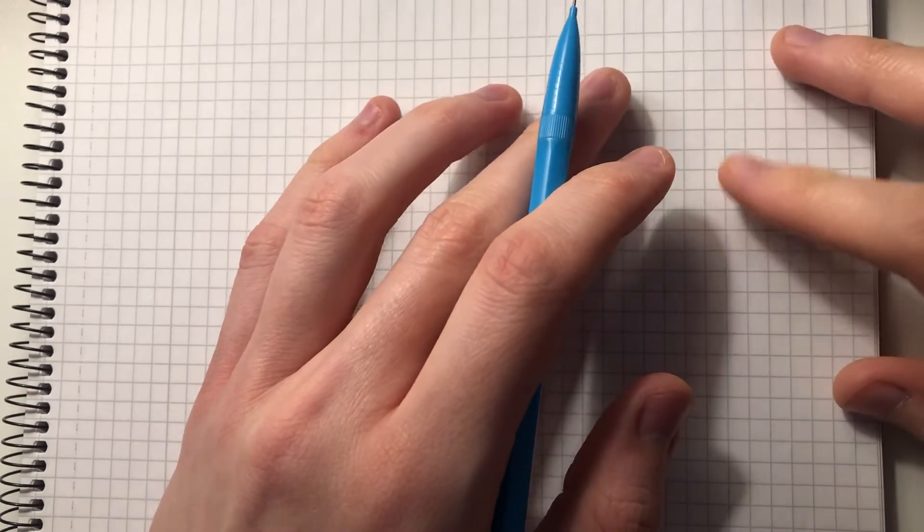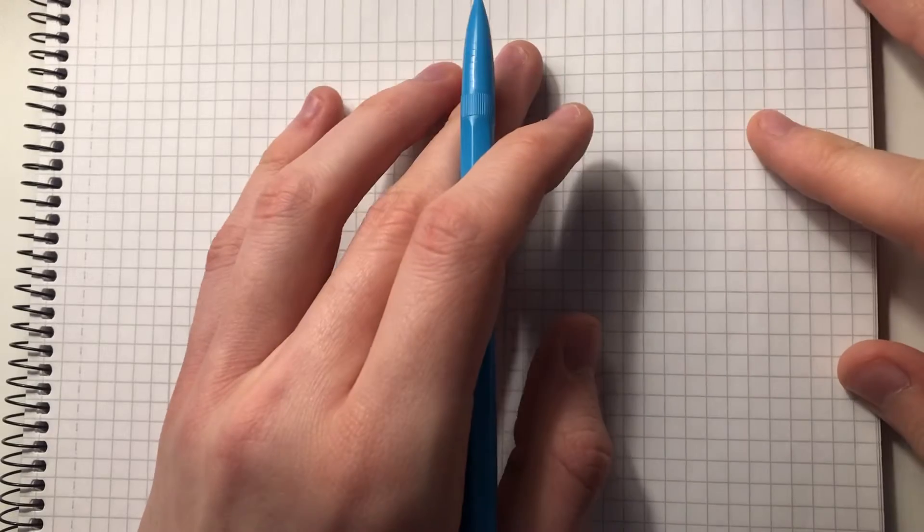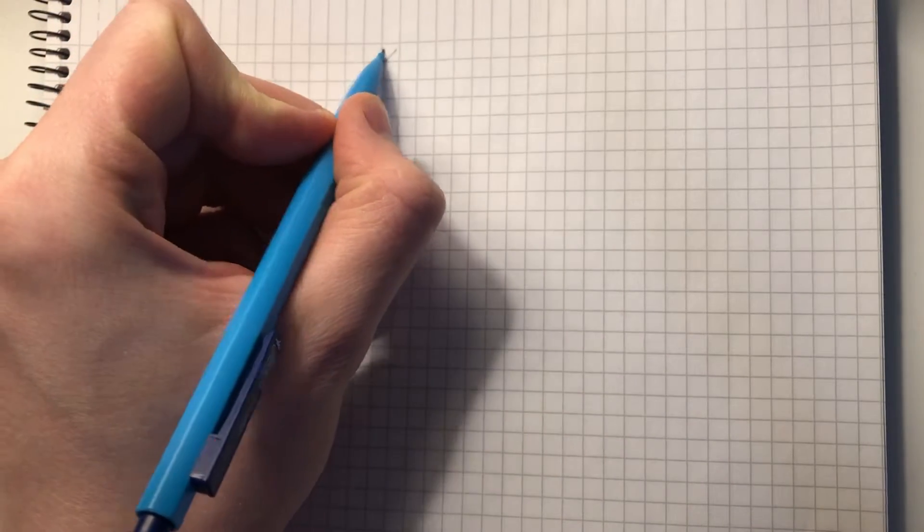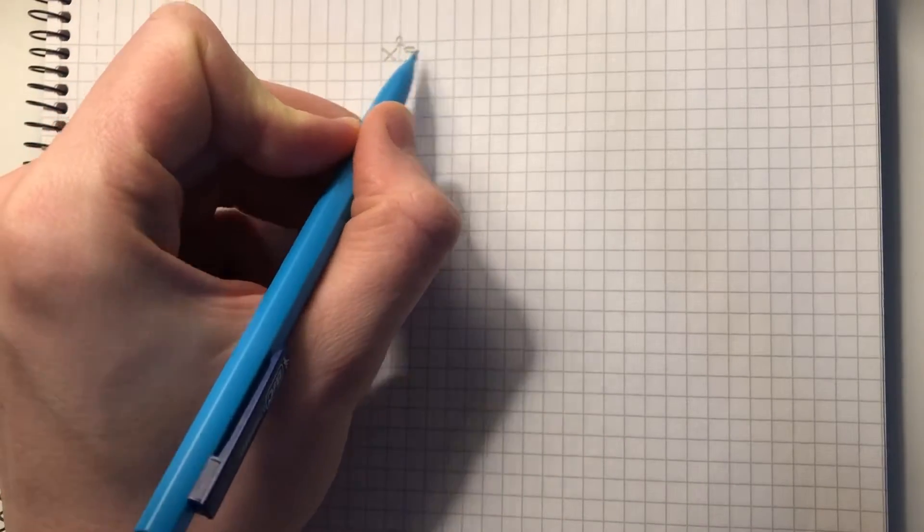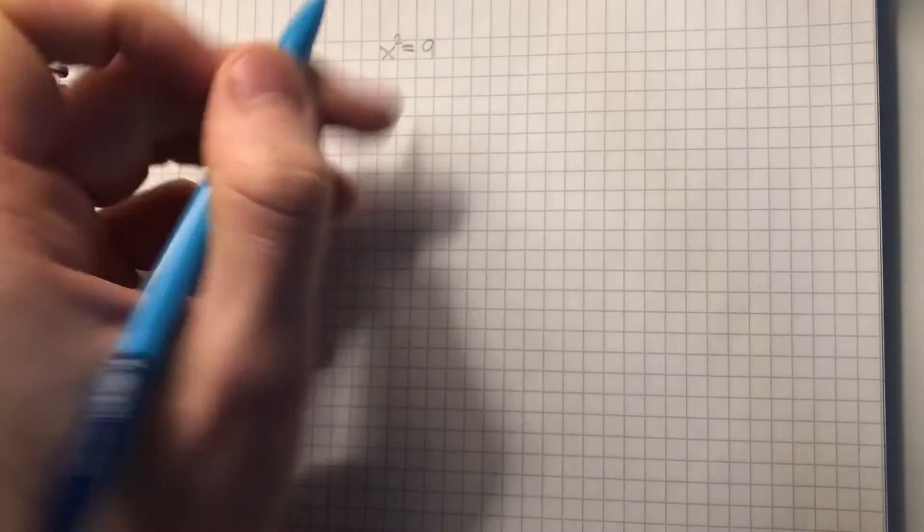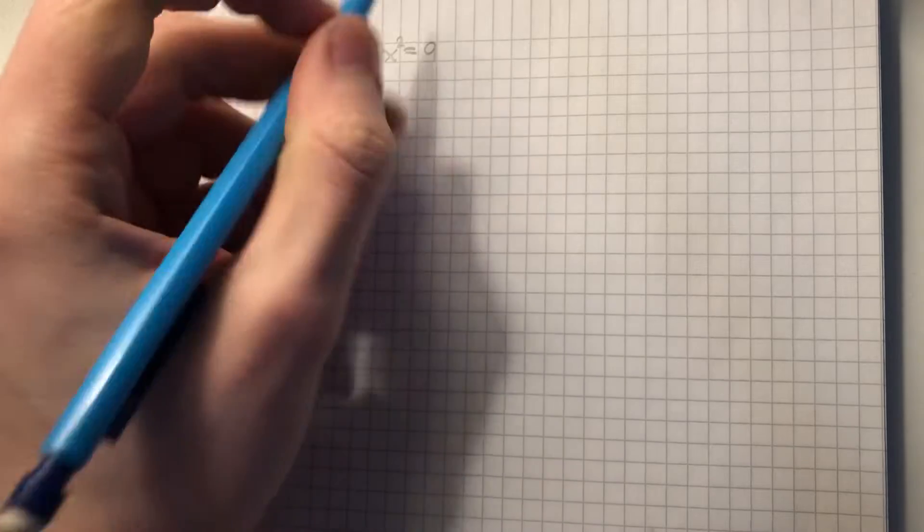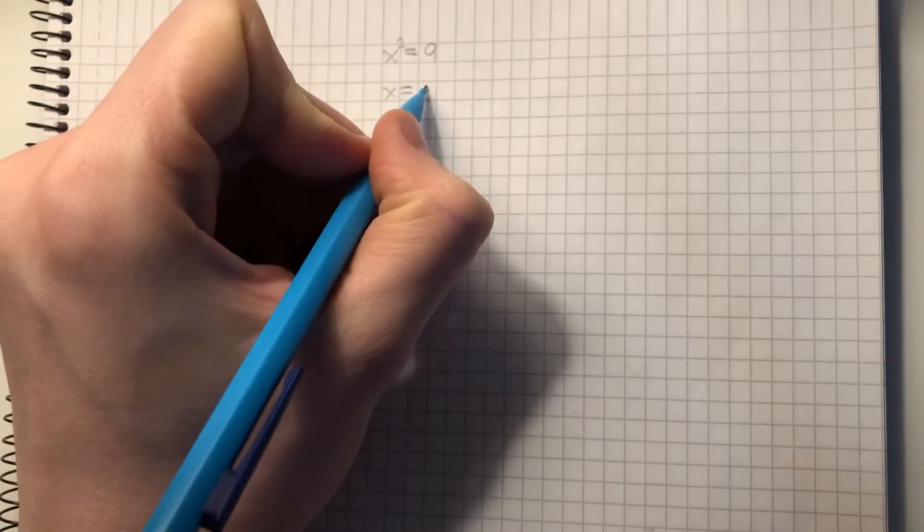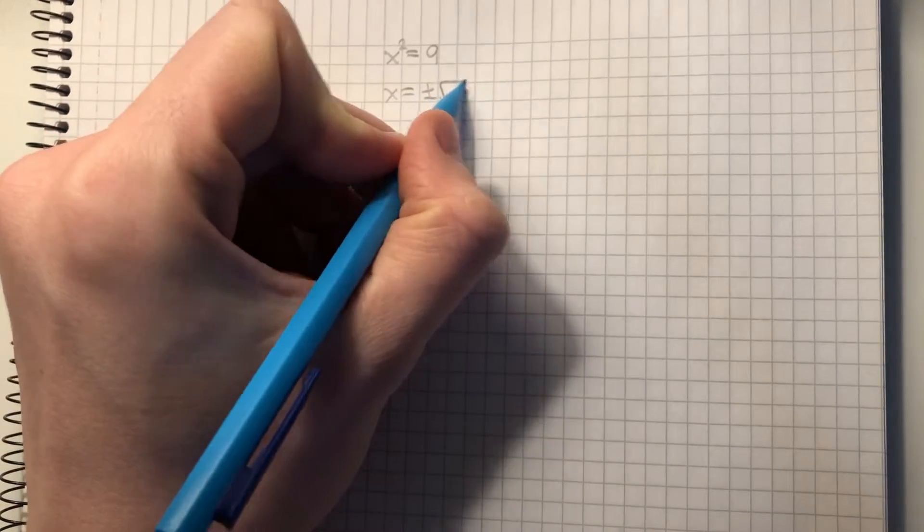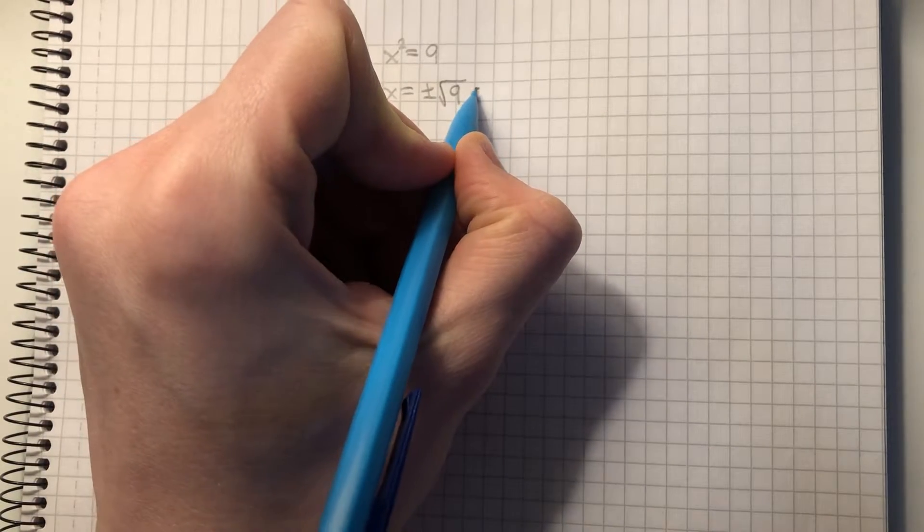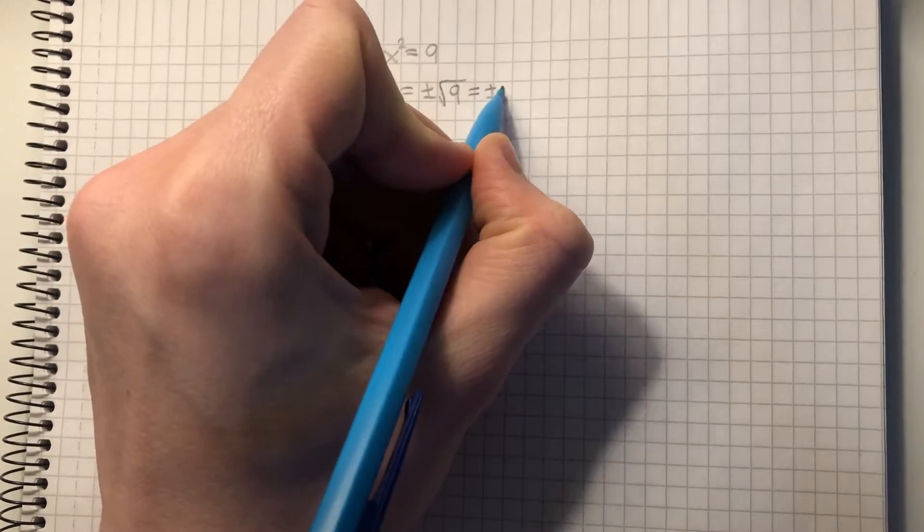Hi, let's talk a little bit about imaginary numbers and what that is. So let's start with saying that we have an equation, pretty basic: x² = 9, which gives us x equals plus or minus square root of 9, which is plus or minus 3.